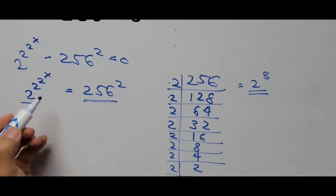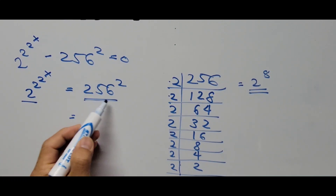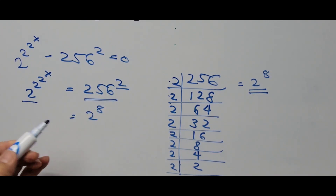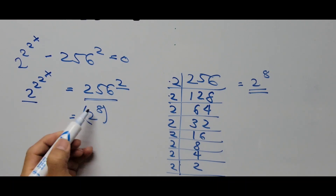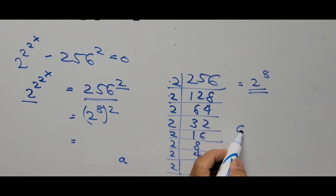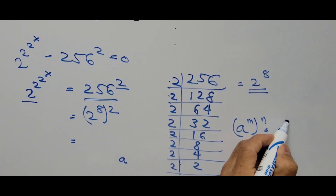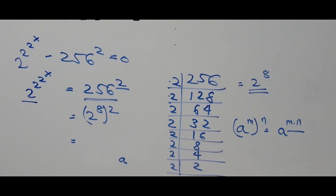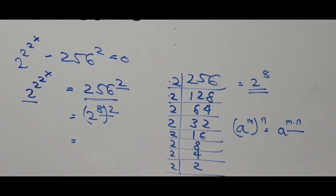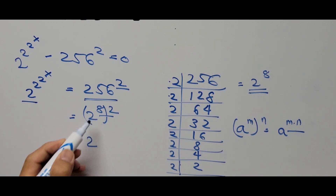We substitute 2^8 in place of 256, so the right side becomes 2 to the 8th power raised to the second power. Applying the exponent rule — a raised to m raised to n equals a raised to m times n — we multiply the exponents: 8 times 2 equals 16. So the right side is now 2 raised to the 16th power.